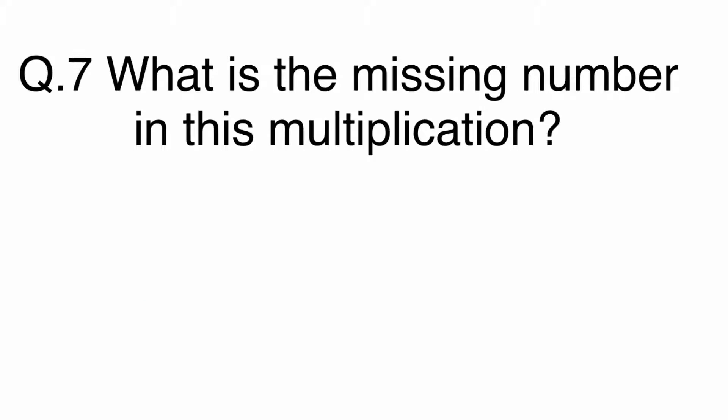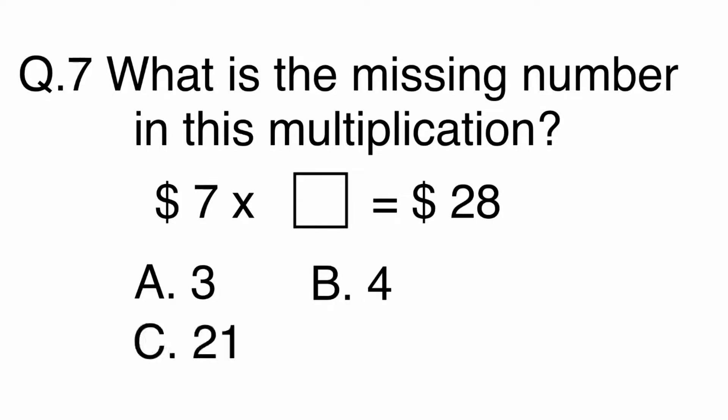Question 7. What is the missing number in this multiplication? Seven dollars times what equals twenty-eight dollars. A. 3, B. 4, C. 21, or D. 35.